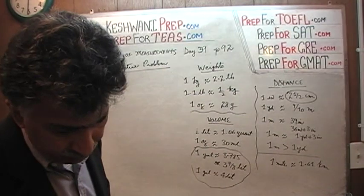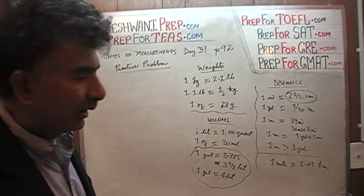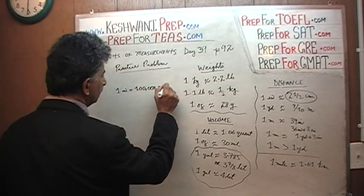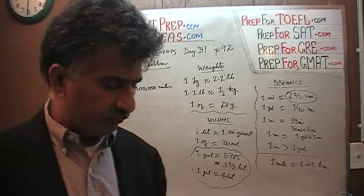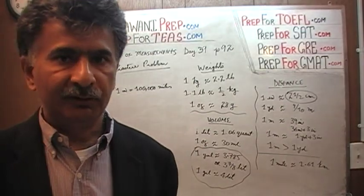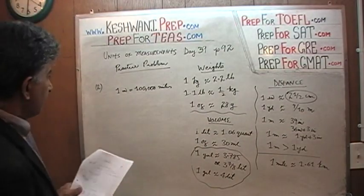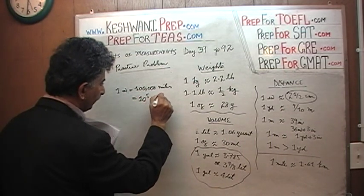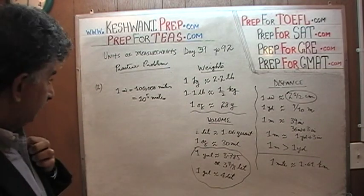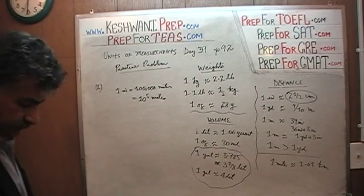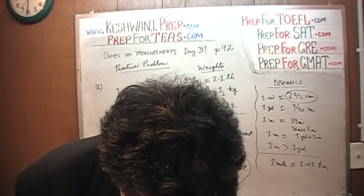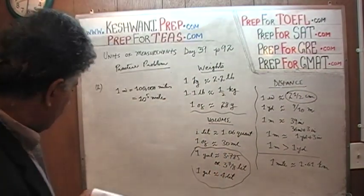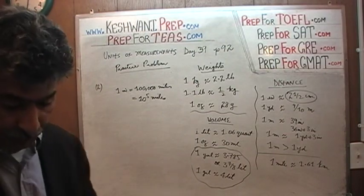Number two. On the scale model of a solar system one inch equals one hundred thousand miles. We have a scale model of our solar system and that's what the scale is, one inch represents a distance of one hundred thousand miles, which by the way, one with five zeros can be written as 10 raised to 5 miles. What is the question asking? If the actual distance between the sun and the earth is 93 million miles, let's set it up as a proportion problem, it'll be easier.